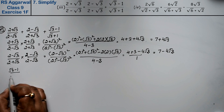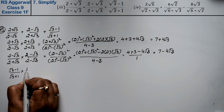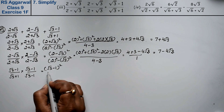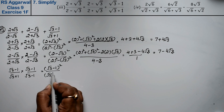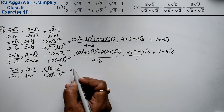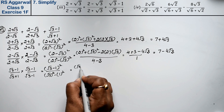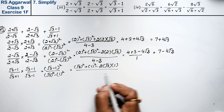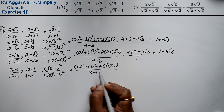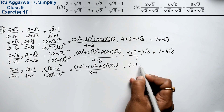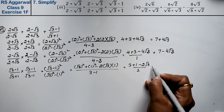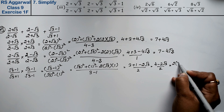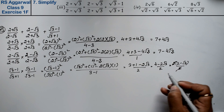For the last term (√3 - 1)/(√3 + 1), we rationalize by multiplying by (√3 - 1)/(√3 - 1). The numerator is (√3 - 1)² = 3 + 1 - 2√3 = 4 - 2√3, over (√3)² - 1² = 3 - 1 = 2. So (4 - 2√3)/2. Taking 2 common: 2(2 - √3)/2 = 2 - √3.